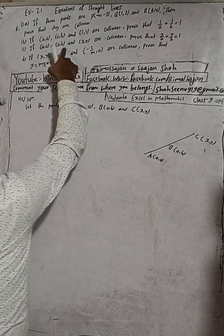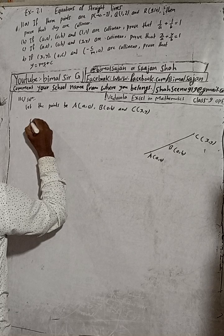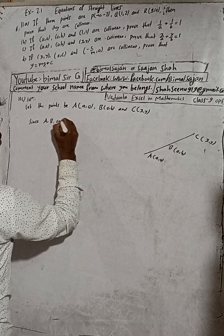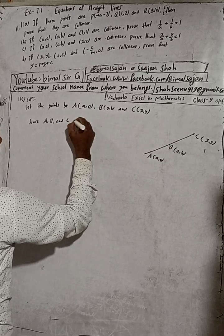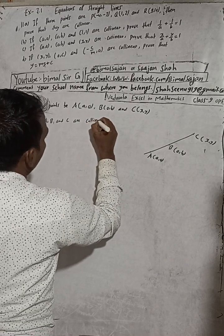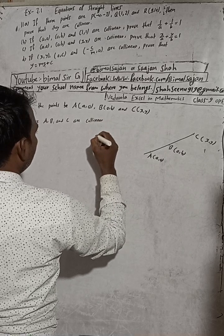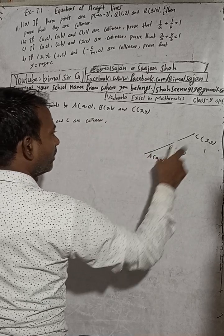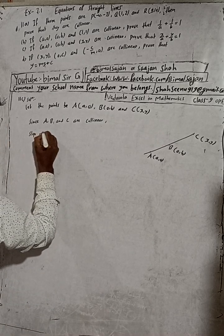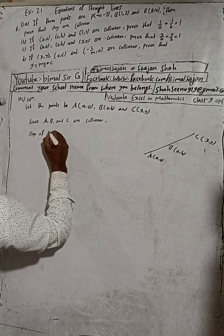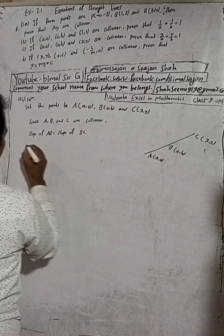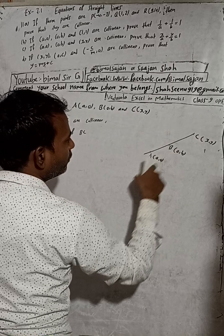Since A, B, and C are collinear, slope of AB is equal to slope of BC. Collinear means all three points lie on the same line, so the slopes between any two pairs of points must be equal.